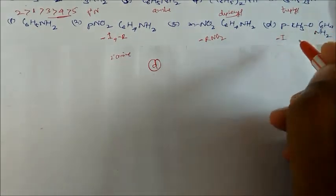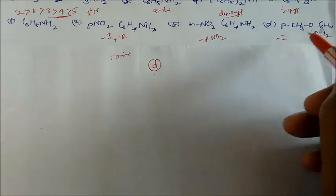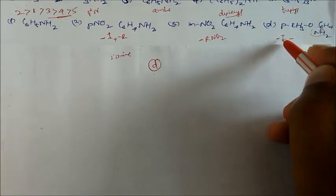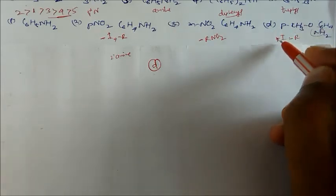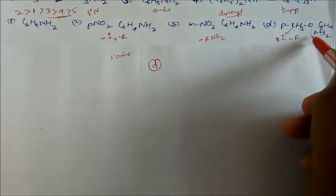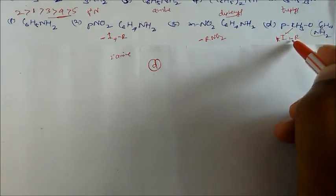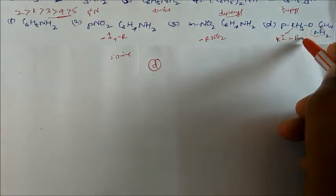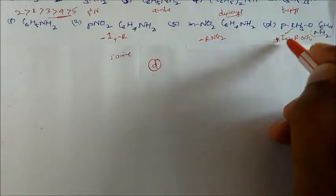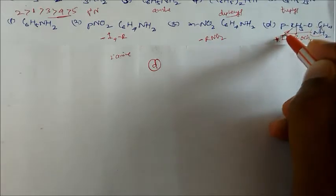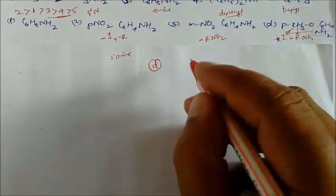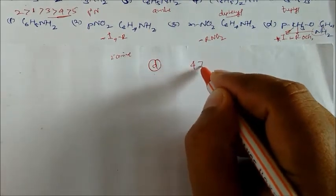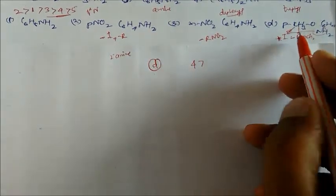Analyzing the electronic effects: the NH2 group of aniline gives a –I and +R effect. The substituent gives +I, while the OCH3 group gives –R and +I effects. So the order of basicity will be: compound 4 first, as it donates electrons most effectively.